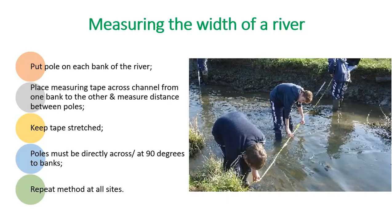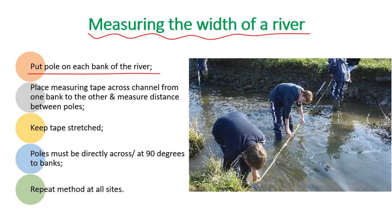To measure the width of a river, place a ranging pole at each bank. Then stretch a measuring tape across the channel from one bank to the other, and measure the distance between the two ranging poles. Make sure the tape is kept stretched out and that the poles are directly across from each other at 90 degrees to each bank. Repeat this at different sites along the river to measure how the width changes.